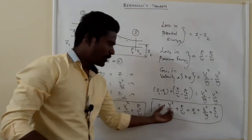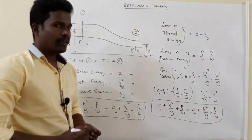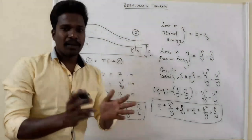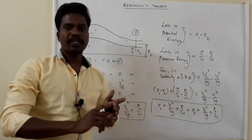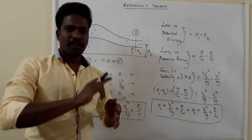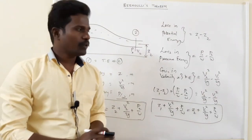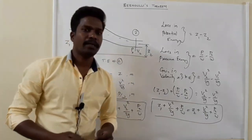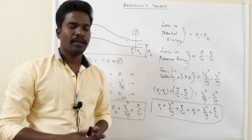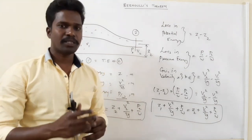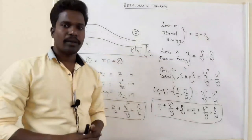Total energy at point 1 equals total energy at point 2. This Bernoulli's equation is applicable for steady, continuous, incompressible, frictionless, non-viscous flow. The applications include: venturimeter, orifice meter, rotometer, and pitot tube. These instruments are Bernoulli's theorem mode applications, and that is the basis for equipment design.